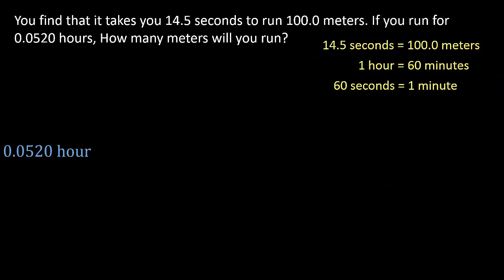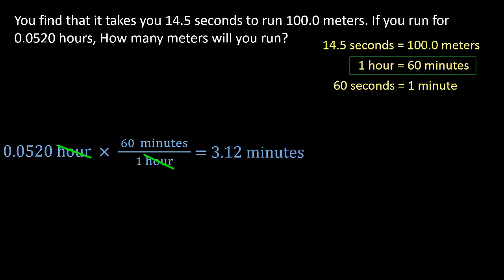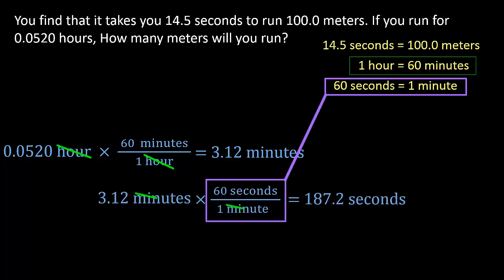We write down what's given in the problem, which is the amount of hours, and so the first conversion has hours on the bottom and minutes on top. The answer is in minutes, and we can use a conversion factor with minutes on the bottom, seconds on top, leaving us with seconds.